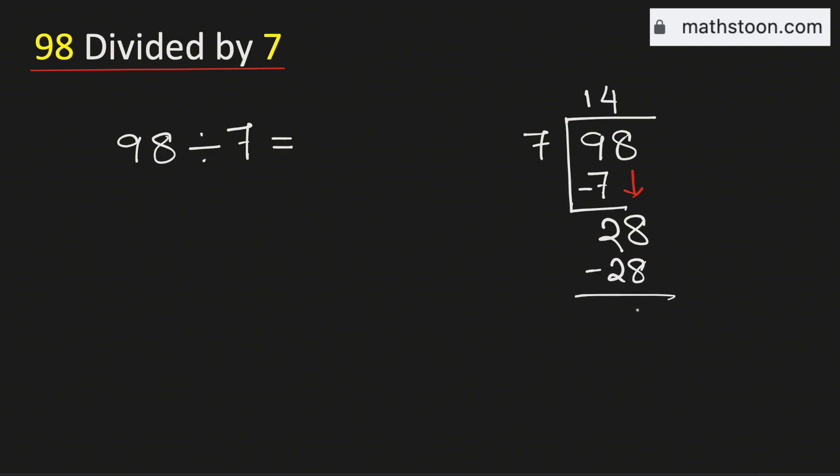Now, if we subtract, we get 0. Therefore, 98 divided by 7 is equal to 14. And this is our final answer.